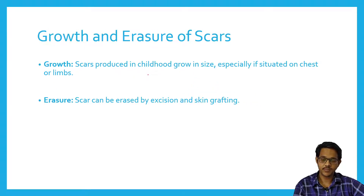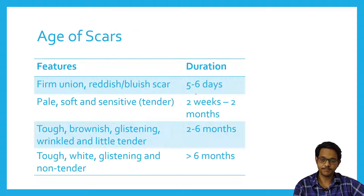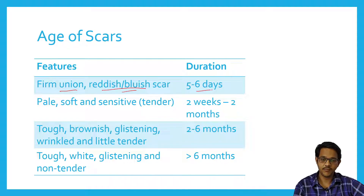Growth and erasure of scars: scars produced in childhood grow in size, especially if situated on the chest or limbs. So a scar found in children may not be the same size as it grows with the body. Scars can be erased easily by excision or by skin grafting. Regarding the age of scars: if the scar is firm and has a reddish to bluish color, it is usually five to six days old.